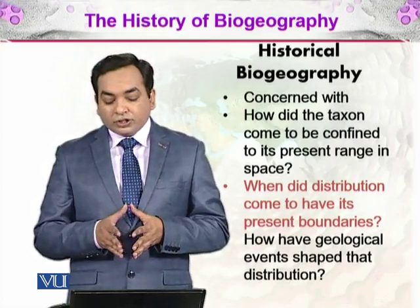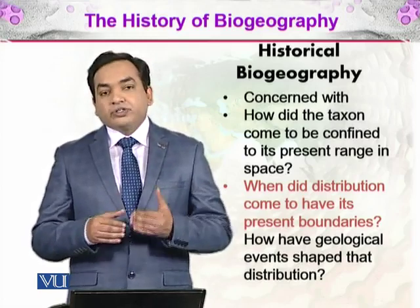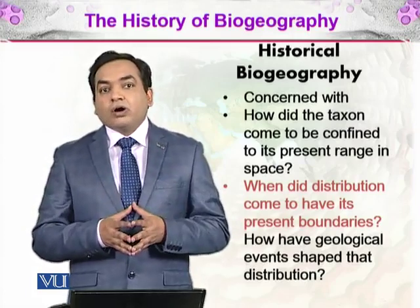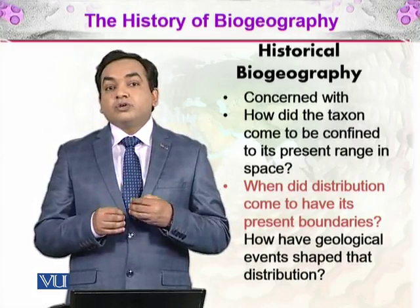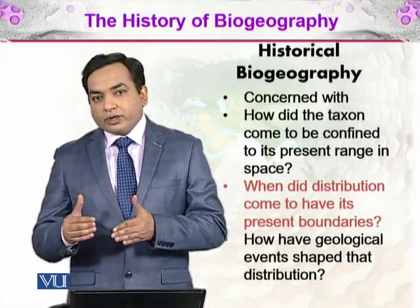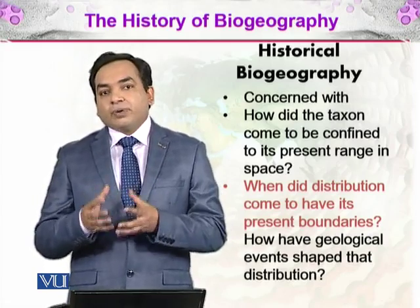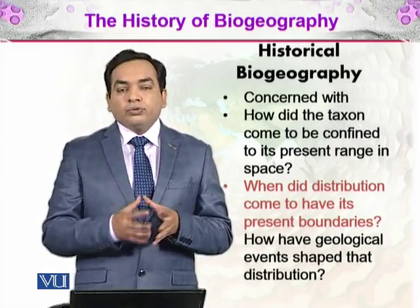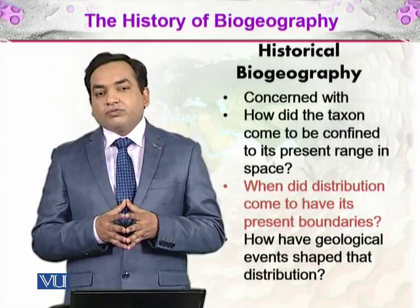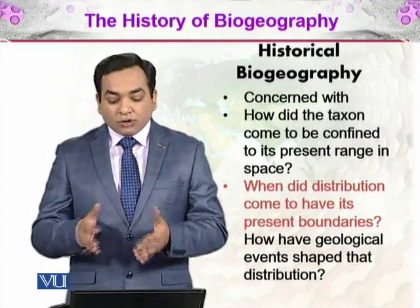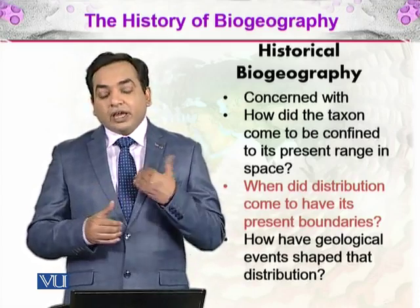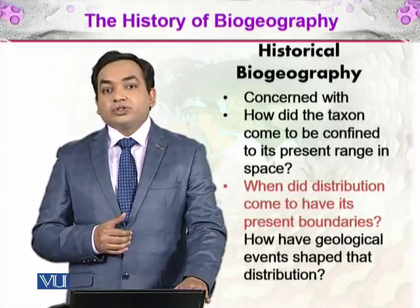Historical biogeography examines how geographical events shaped distribution. For instance, island formation and continental drift produced many new distributions. India was originally part of Africa, separated from it, and continued moving toward Asia, eventually attaching to Asia and giving rise to the Himalayas. All such geological events gave rise to new biogeographical distributions.